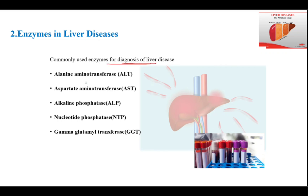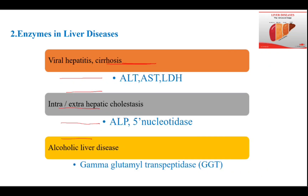Commonly used enzymes for diagnosis of liver diseases are ALT (alanine aminotransferase), AST (aspartate aminotransferase), ALP (alkaline phosphatase), NTP (nucleotide phosphatase), and GGT (gamma-glutamyl transferase).